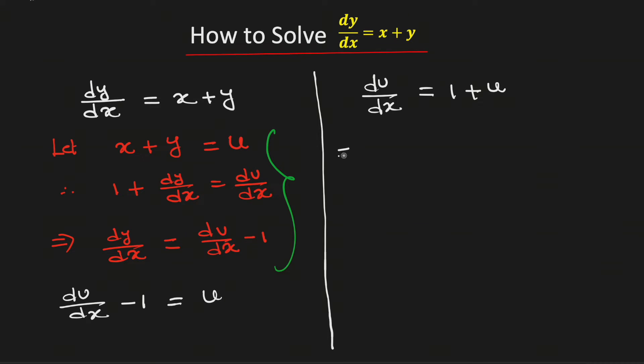Now this will imply that du divided by 1 plus u equals dx. Now we will integrate both sides. So we need to add the integration constant c.